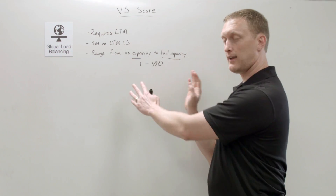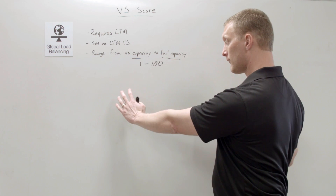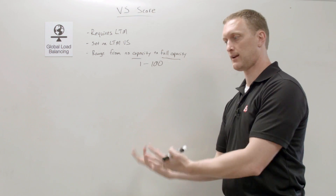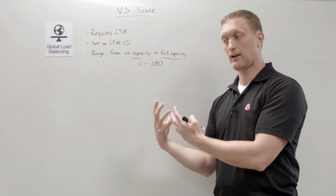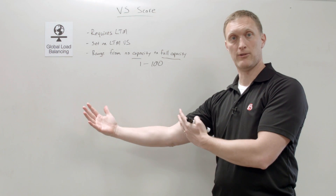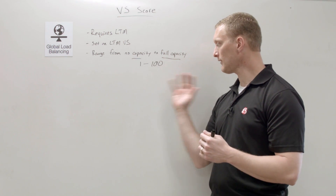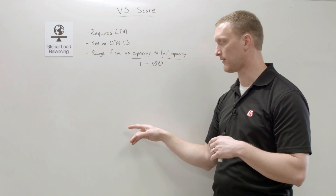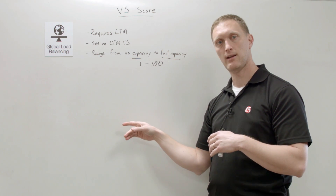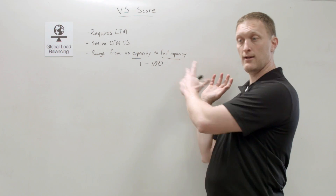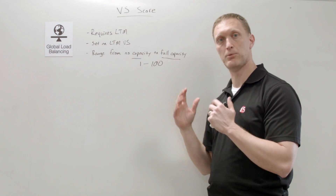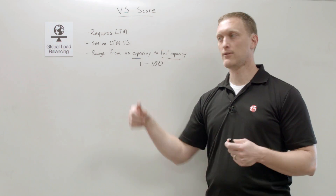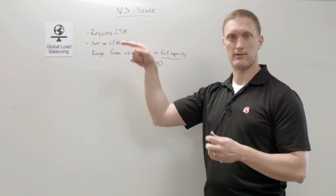You might have another virtual server with different pools that calculates the same thing. If that other virtual server scores, say, 75, it would win because high score wins. So the virtual server with the most available capacity gets selected.